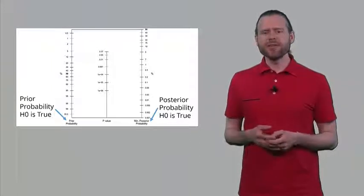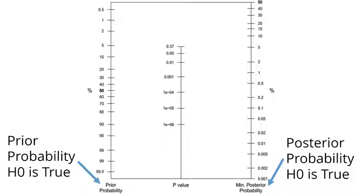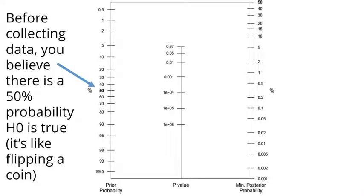In this graph, on the left we see the prior probability that the null hypothesis is true. In the middle graph we see the p-value that we have observed, and on the right we can get the posterior probability that the null hypothesis is true. Let's start by thinking of a situation where, before we collect some data, we think that anything goes — a person might be sick or not, and both are 50% probable. Here I've pointed an arrow at the 50% prior probability that the null hypothesis is true.